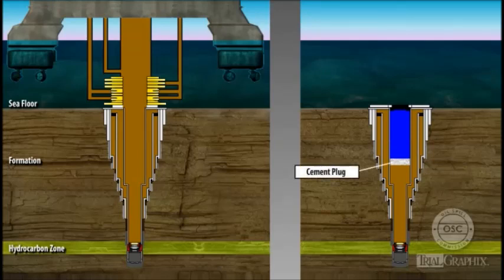MMS required BP to install a cement plug as a backup seal to secure the well while the Deepwater Horizon was gone. BP engineers decided that the rig crew would install this plug deep in the well, roughly 3,000 feet below the seafloor.